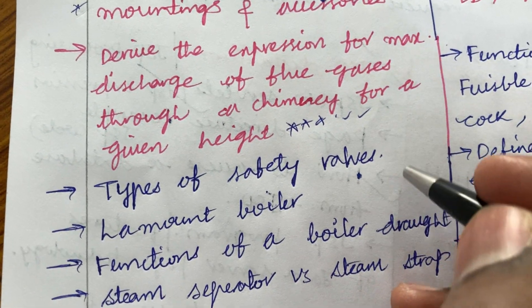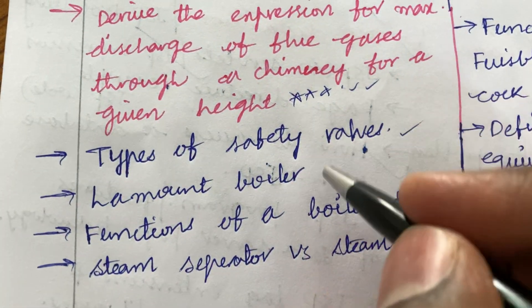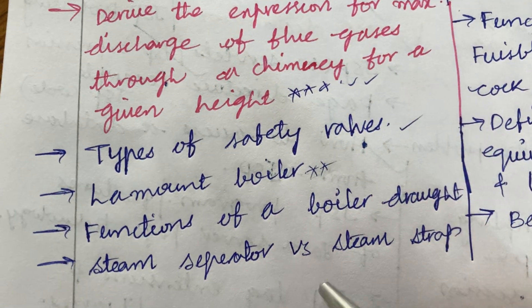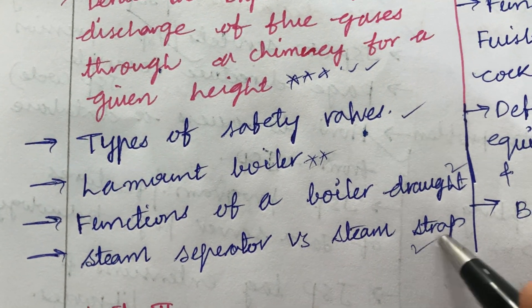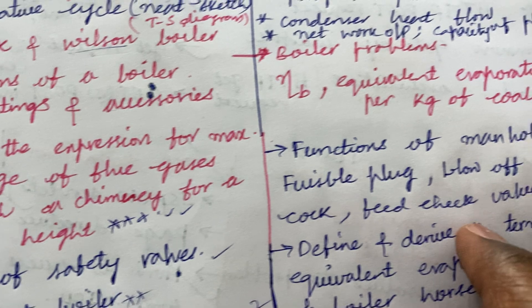Types of safety valves is said to be a short question. And lamont boiler is also said to be very important and functions of a boiler draft is said to be a short question. And steam separator versus steam trap is a short question.